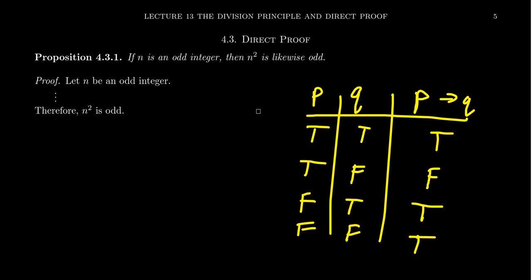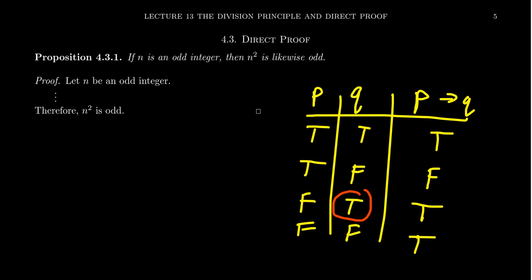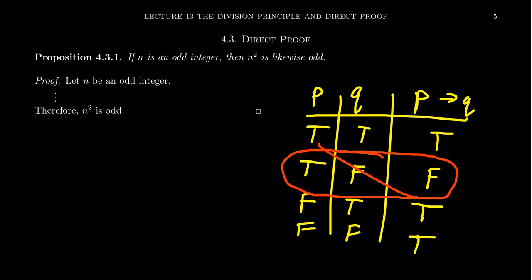Now these last two cases on the table, when the premise is false, the conditional is considered true — what we call vacuously true. And likewise, when the conclusion is true regardless of what happens with the premise, the conditional is likewise true, what we call trivially true. So the only case that really deserves attention is when the premise is true but the conclusion is false — we have to argue that this possibility never happens.